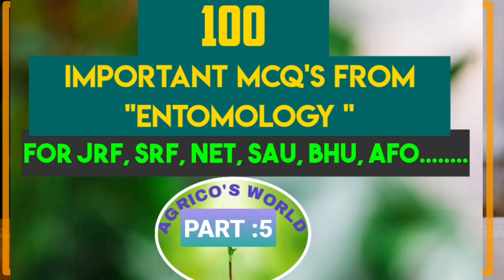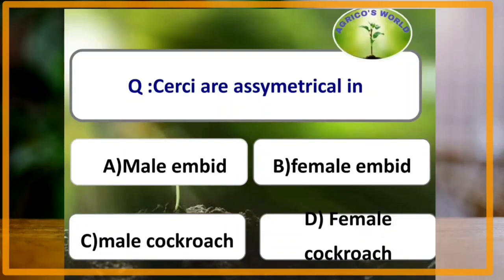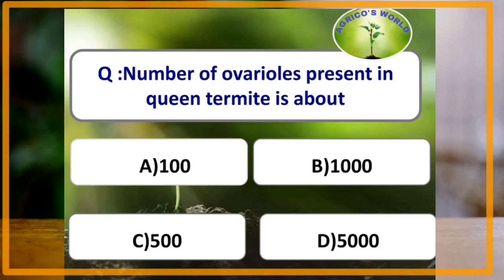Here we are with our first question: Cerci are asymmetrical in which of the following? The answer is male earwig.